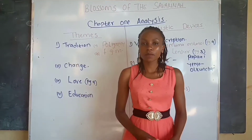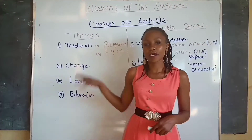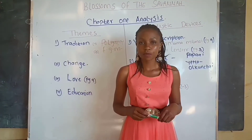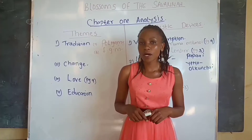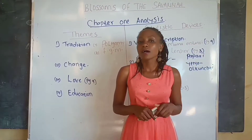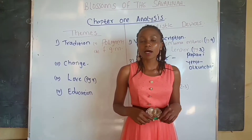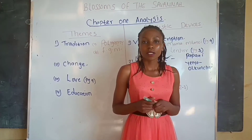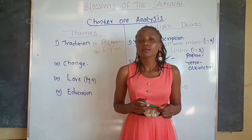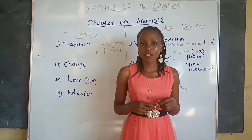Let us now move to the themes. We are going to focus on the themes in Chapter 1 and we have four. The first theme is the theme of tradition. Tradition in Chapter 1 is presented in two ways. The first way is polygamy — most of the men in Nasila are polygamous, and we find Uncle Simiren has four wives and 16 children.